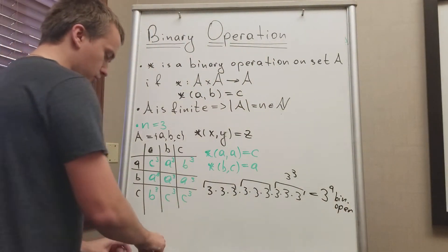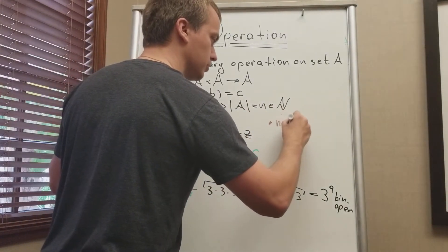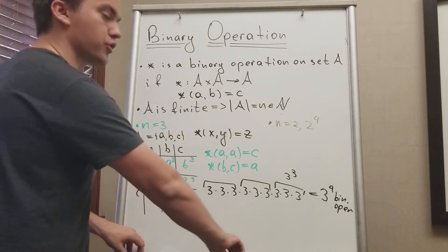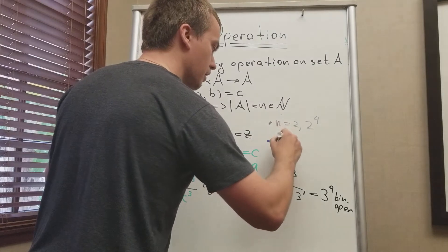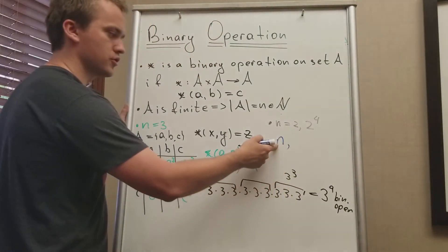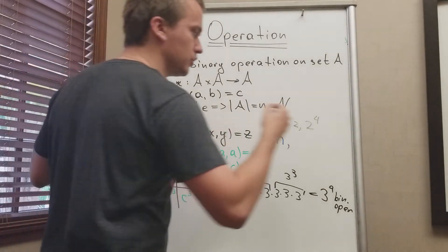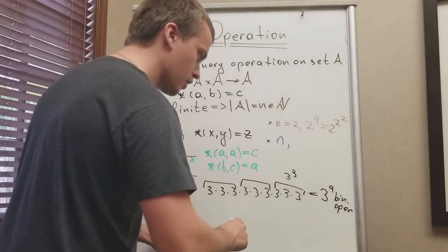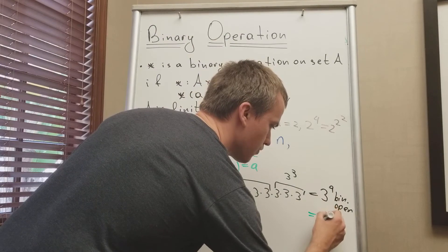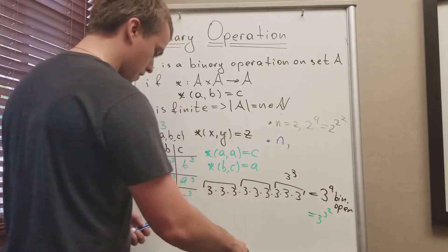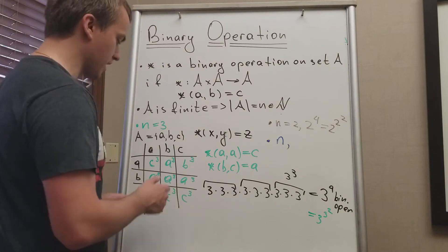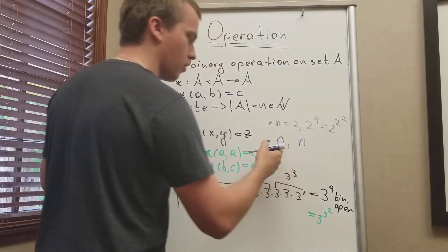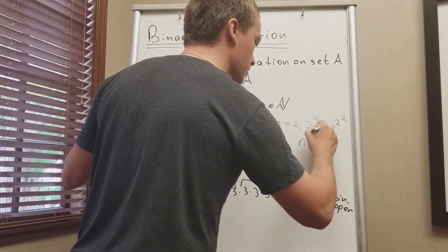As you remember from the last video, for n equals to 2 we have two to the four binary operations. And then we can write a formula for general n. In the case of n equals to 2, we have two to the two-squared. When n equals to 3, we have three to the three-squared, and three squared is nine. We can make a guess — and actually check it using the counting principle by drawing a table — that the number of binary operations on a finite set with n elements is n to the n-squared.